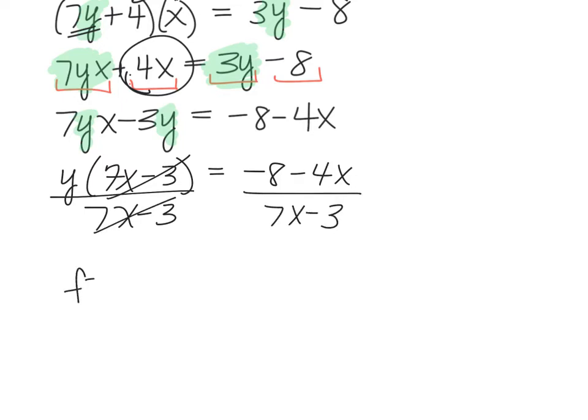So the inverse, we always want to go back and make sure you remember to use the original inverse notation. The inverse will be negative 8 minus 4x, all divided by 7x minus 3.